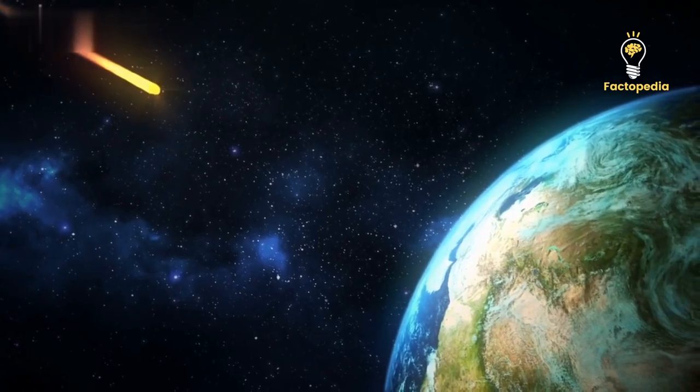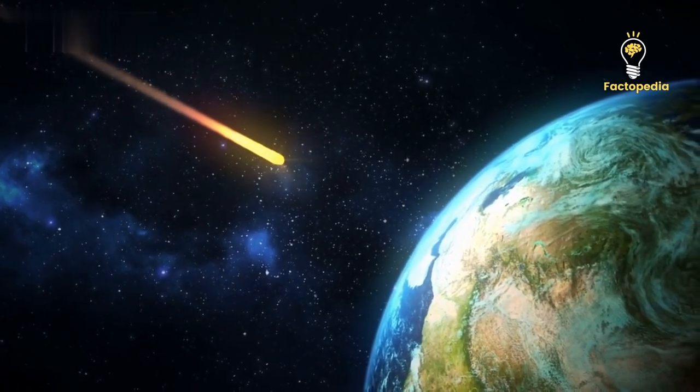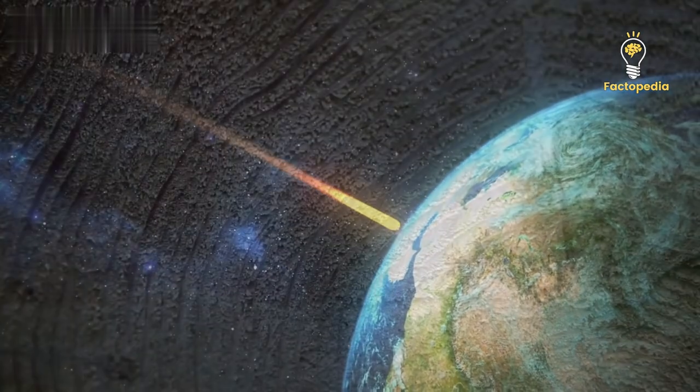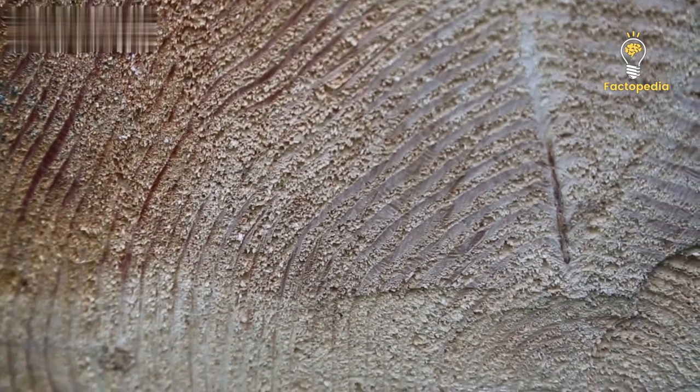Around 1,300 years ago, an enigmatic cosmic disturbance made an impact on our planet, leaving its marks within the intricate patterns of tree rings across the world and even within the frozen ice cores of Antarctica.